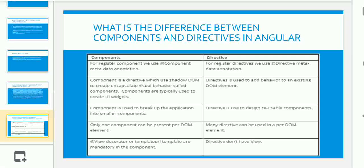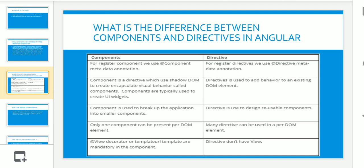The next question was: what is the difference between components and directives in Angular? A component is a directive that uses shadow DOM to create encapsulated visual behavior called components. Components are typically used to create UI widgets. A directive, on the other hand, is used to add behavior to existing DOM elements. These are the key differences I explained during the interview.